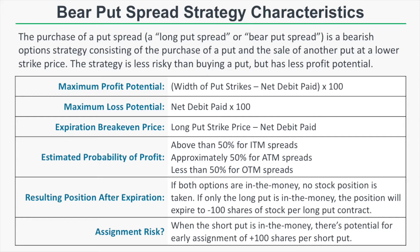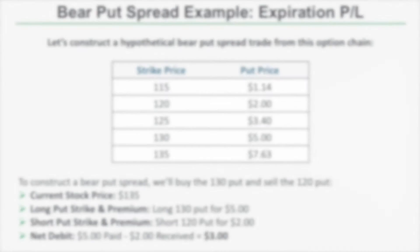The resulting position after expiration depends on whether the spread is entirely in the money or only partially in the money. If both puts are in the money, the exercise and assignment offset and no stock position is taken. If only the long put is in the money, the position expires to negative 100 shares of stock per long put contract — so you'd need to close that long put to avoid automatic exercise. The short put carries assignment risk: if the spread is deep in the money, assignment results in a stock position of plus 100 shares per short put contract.